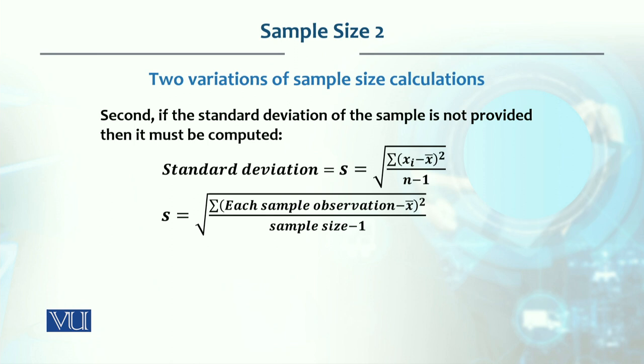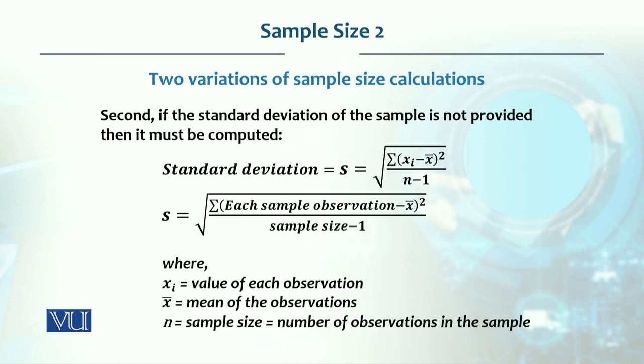S is equal to summation of each sample observation. Each observation, we find the difference with mean and square, and so on. Total we will divide by n-1. So we can tell that XI is value of observation, and n is the sample size or we can say number of observations in a sample.